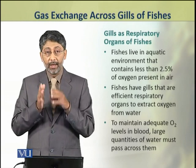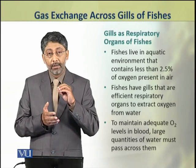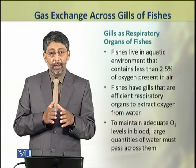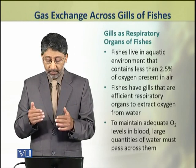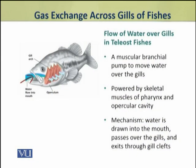However, to maintain an adequate flow or extraction of oxygen into blood, large quantities of water must pass across them. And to maintain continuous flow of water over the respiratory surfaces, that is gills, the teleost fishes have a muscular branchial pump to move water.